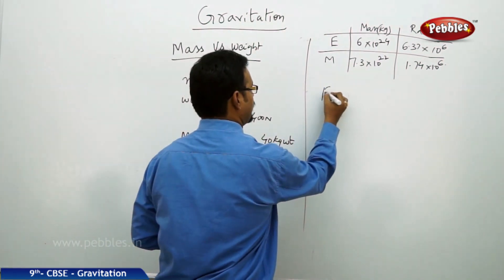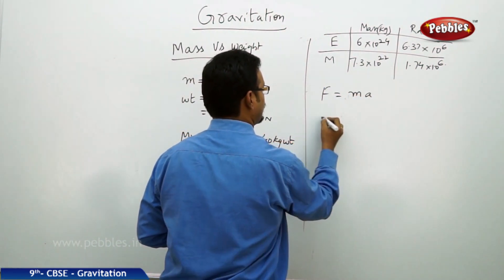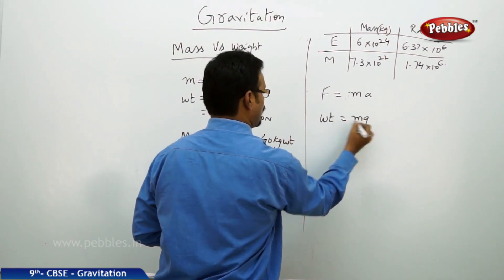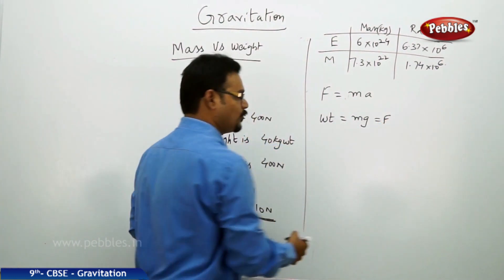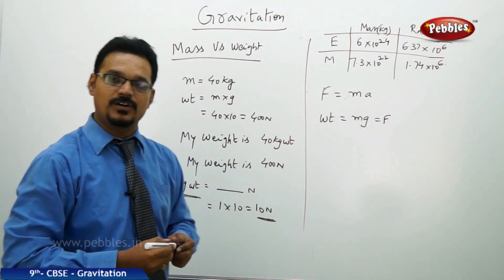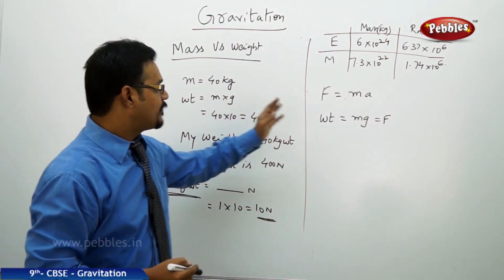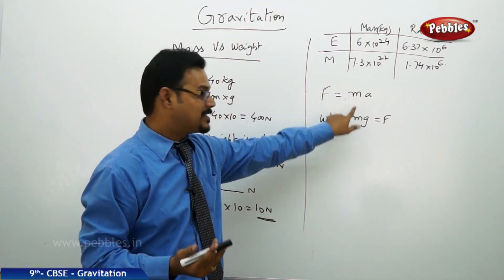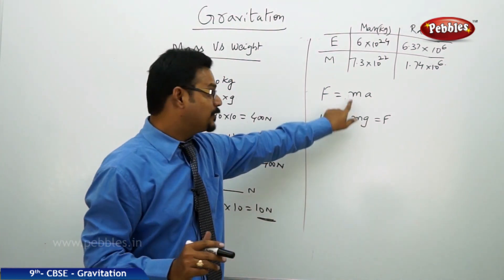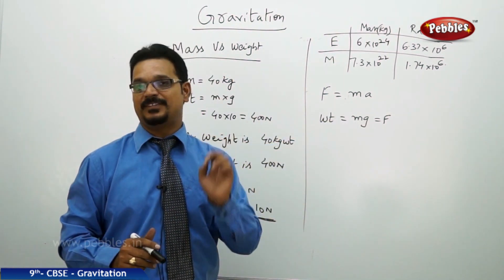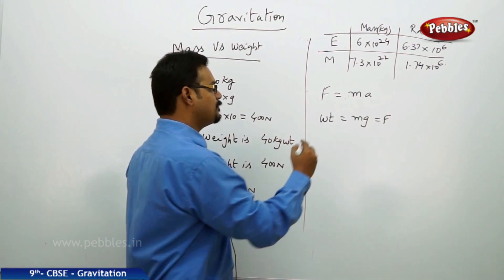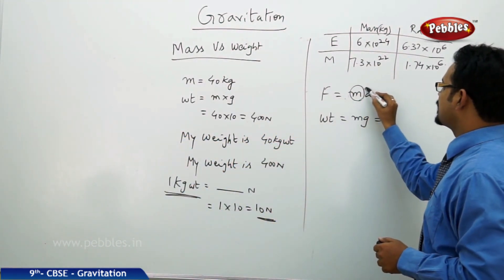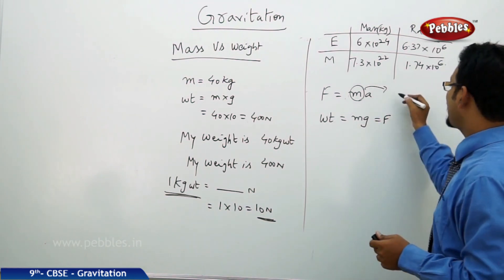Now one more thing I want to tell you: there are two formulas—F equals ma and weight equals mg. Of course, weight is also F, I told you earlier. Weight and force are the same. F equal to ma, F equal mg. See here, m is mass, m is mass—both are masses, but there's a slight difference.